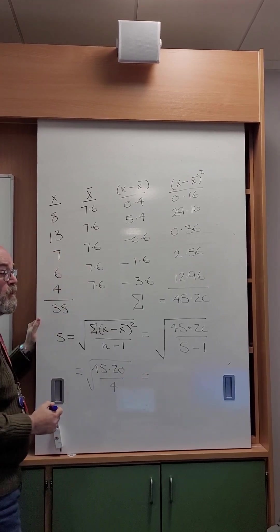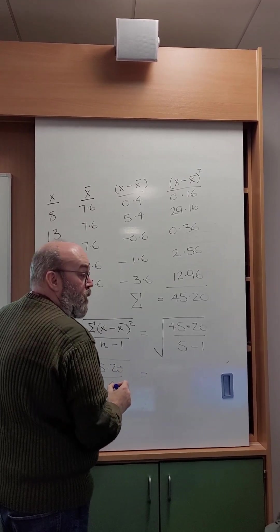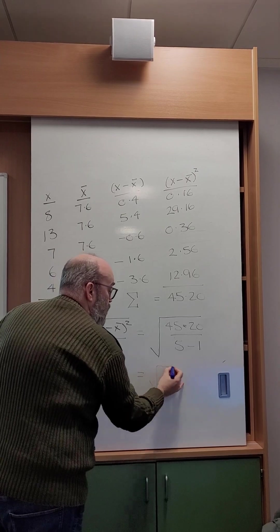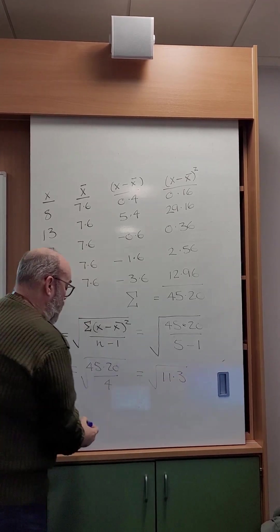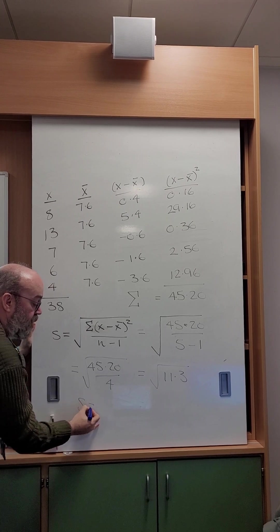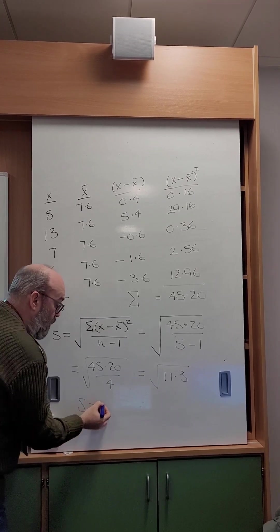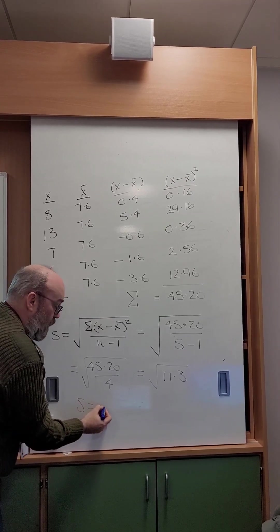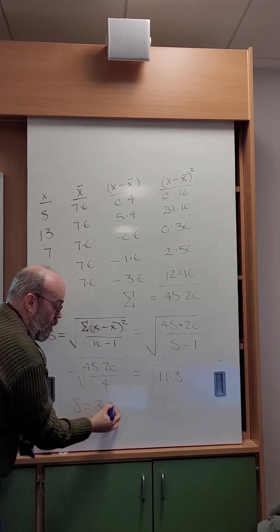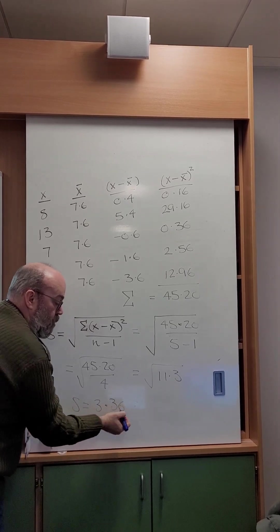In other words, I have the square root of 11.3, meaning that my standard deviation S is just simply going to be 3.36. Thank you.